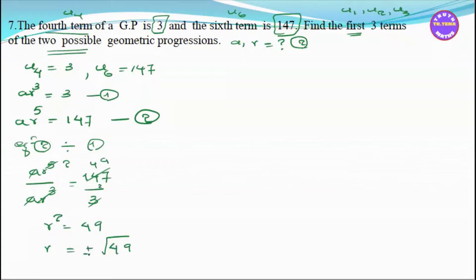Since r² = 49, we take the square root: r = plus or minus square root of 49, so r = plus or minus 7.